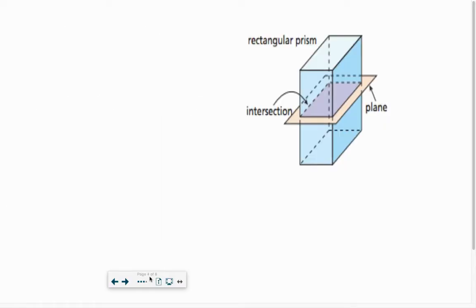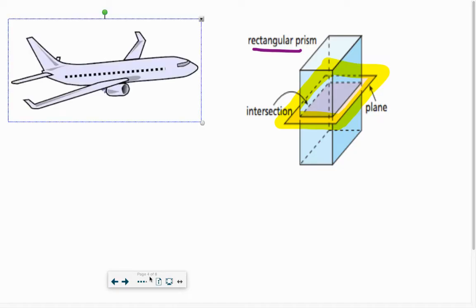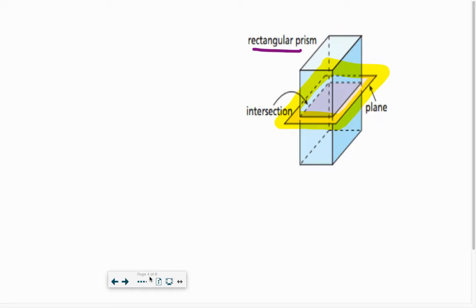Here's our solid. It is a rectangular prism. And when we talk about the intersection of a plane, we're referring to this thing right here, almost as if we're taking a piece of paper and putting it into it. So that's what we mean by plane. Not this airplane, but this little thing here. Again, it's like a piece of paper plane cutting through it. Not an airplane, but a piece of paper plane.